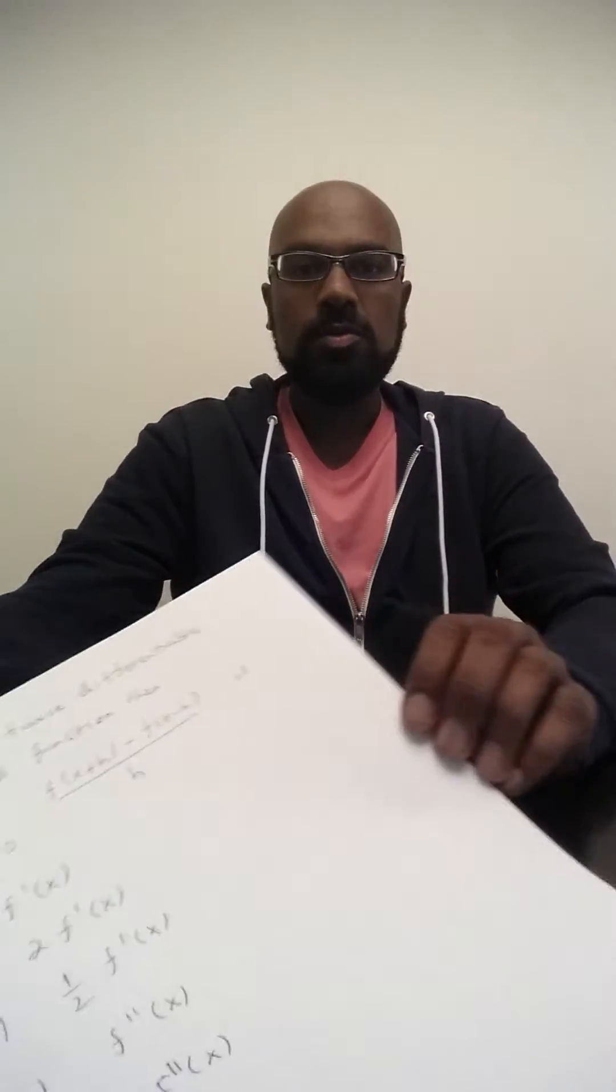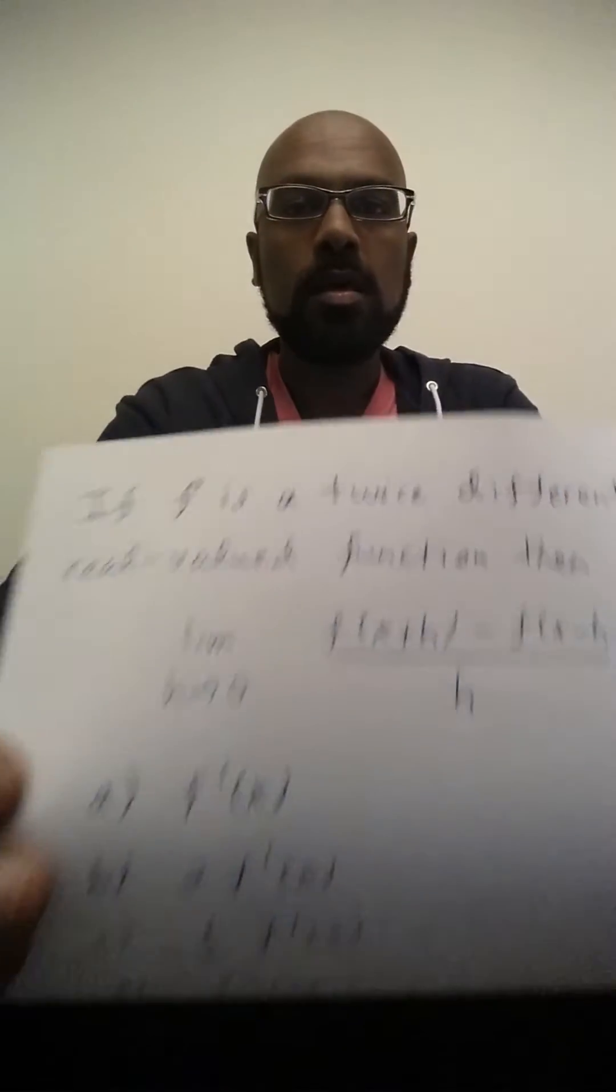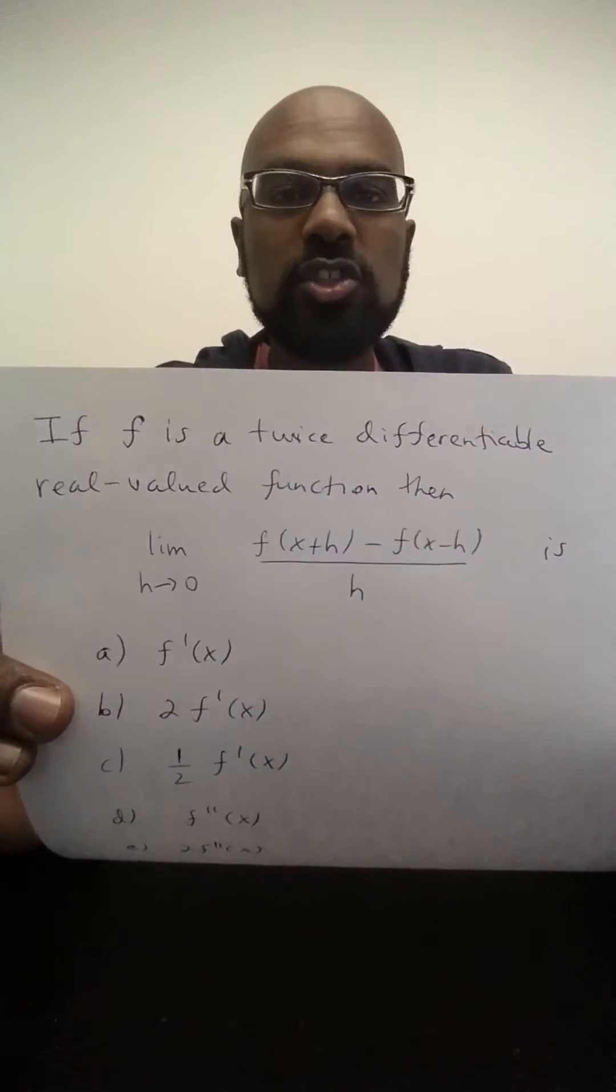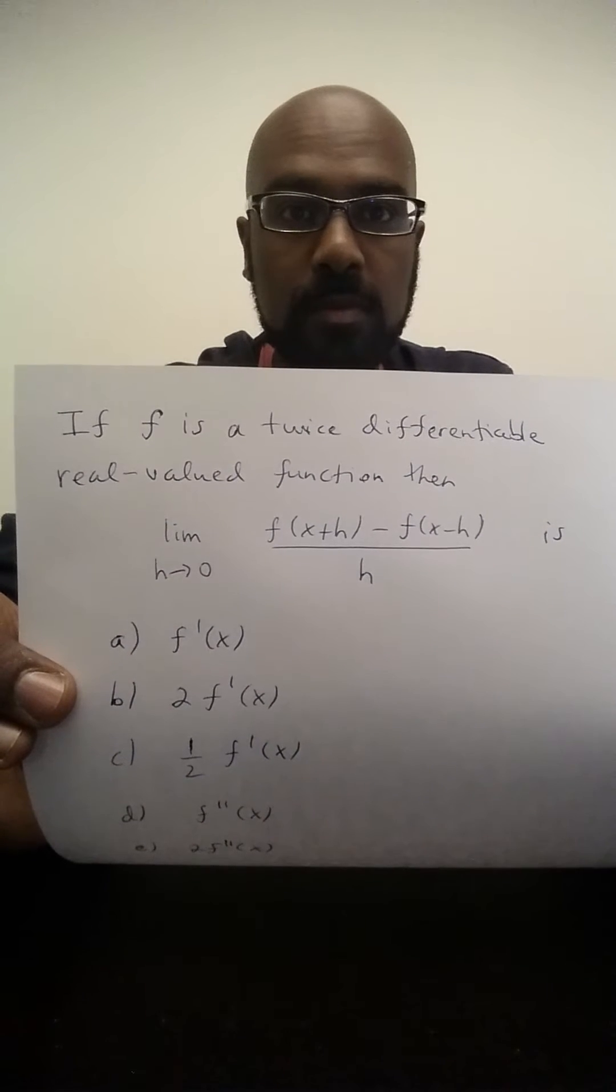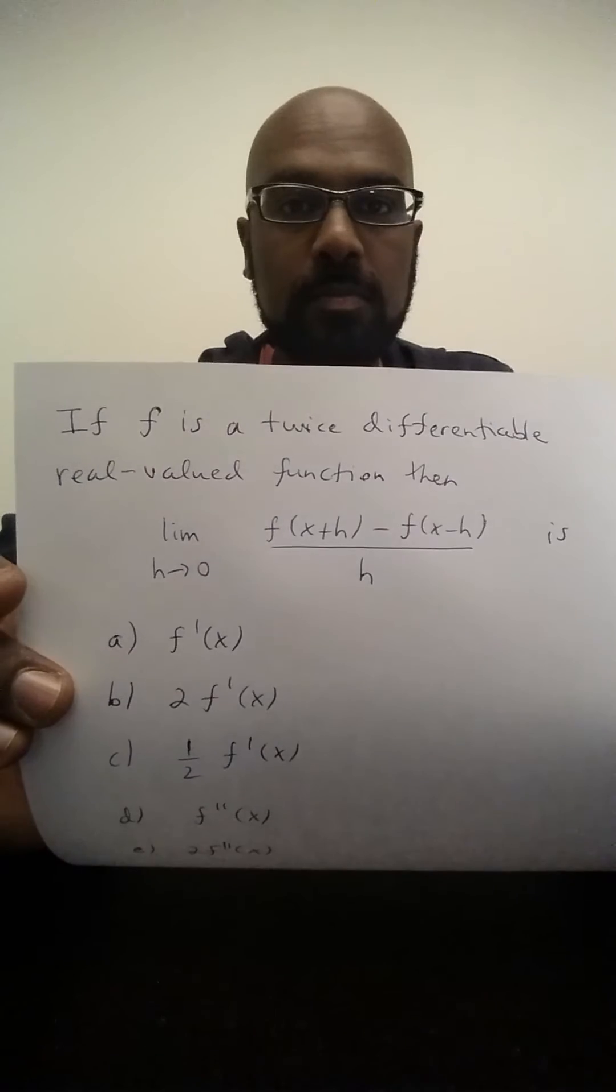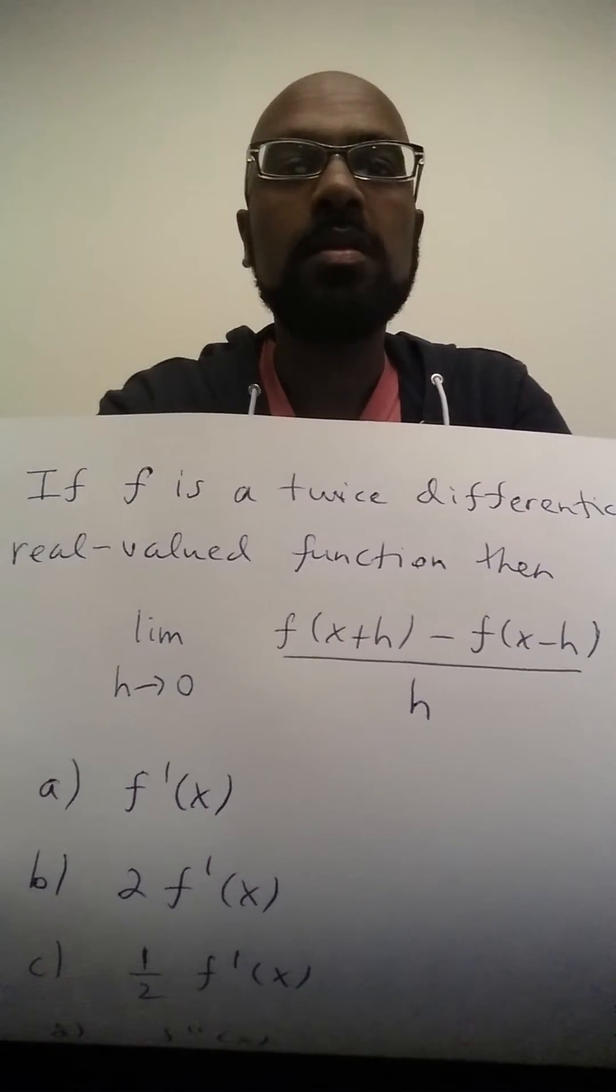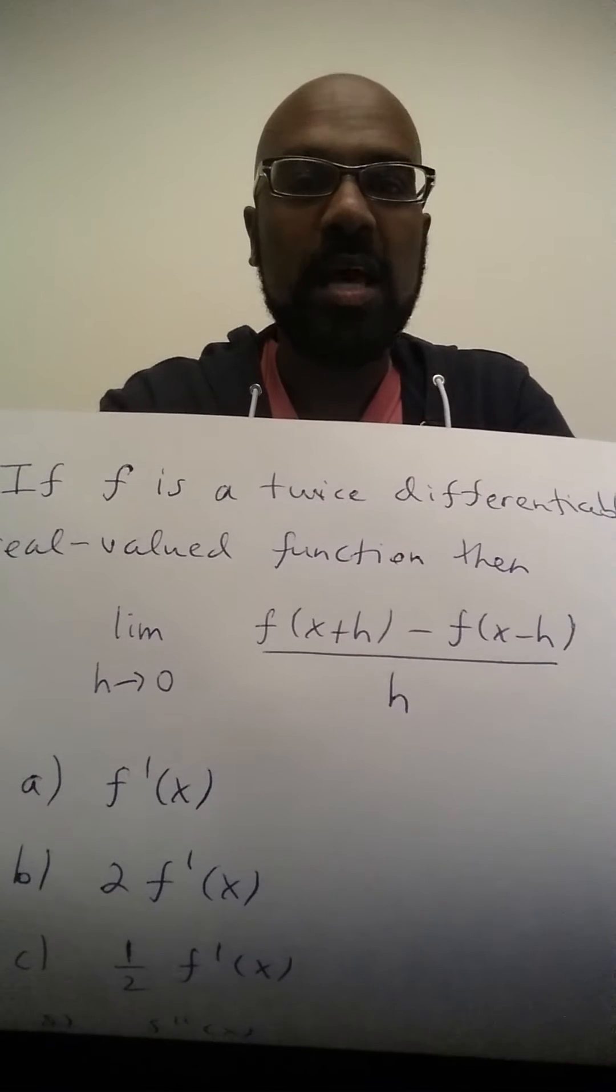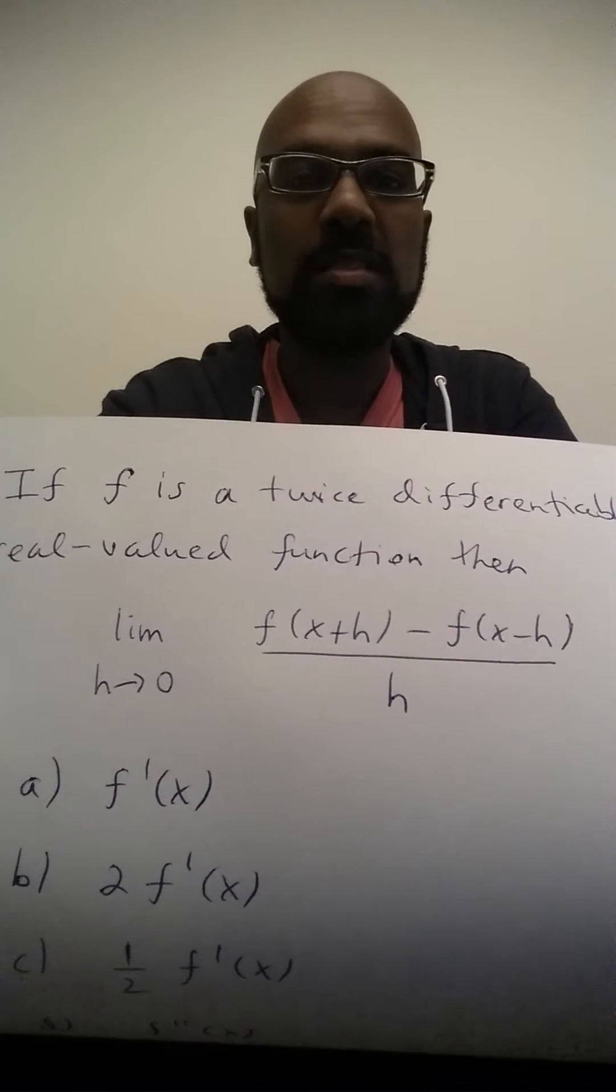So the first problem we'll be talking about, which is our focus today, is the following. The problem asks, if a function is twice differentiable, real valued, then the quantity given by this limit: limit as h approaches 0 of f of x plus h minus f of x minus h over h.